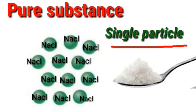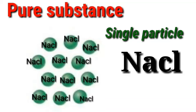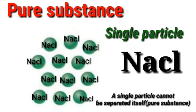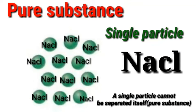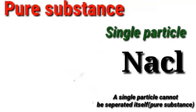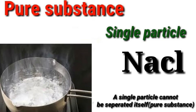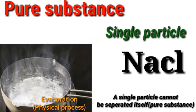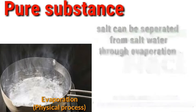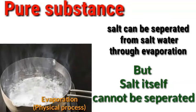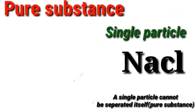Sodium chloride is not separable into its components by a physical process. For example, evaporation is a physical process. Salt in water is a mixture, but salt itself is a single pure substance. We have to make it clear: we cannot easily remove sodium chloride by a physical process.